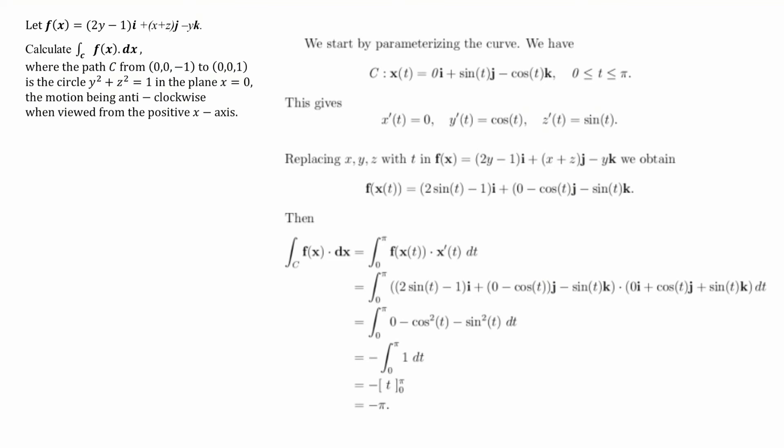So what do we do now? Well, we want to replace x, y and z in f. And the reason we want to do that is that we're going to get everything basically in form, everything down to t because then we can integrate it in the normal way. So if we replace x, y and z with what we use to parameterize the curve, then we can see that we get f of x of t now is equal to (2 sin t minus 1) times the vector i plus (0 minus cos t) of vector j minus sin t times vector k.